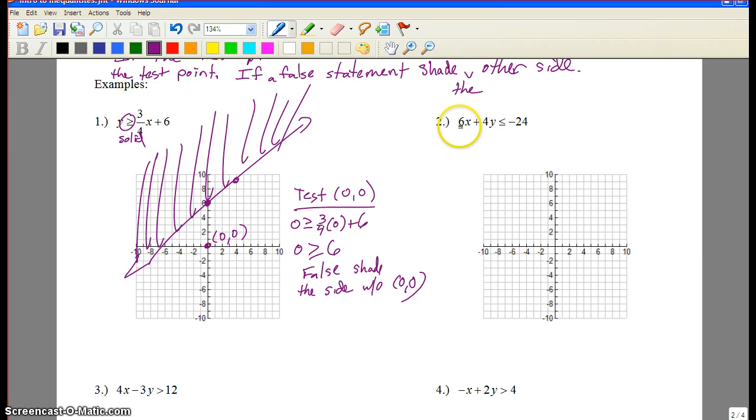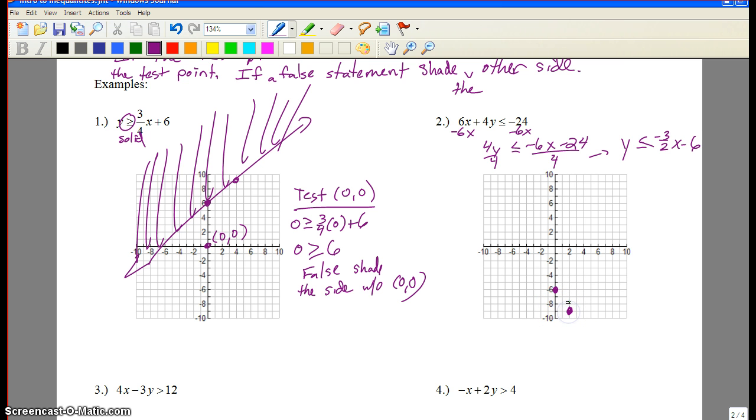Talk about graphing this one. So first, last chapter we started just by solving everything for y. Now, you don't have to do that. There's a bunch of ways to graph it. But if you solve it for y, y is less than or equal to negative three halves x minus six. Negative six over four reduces to negative three halves. So you start at negative six, which is the y-intercept. Then we go down three, right two. And it's solid or dashed, folks?